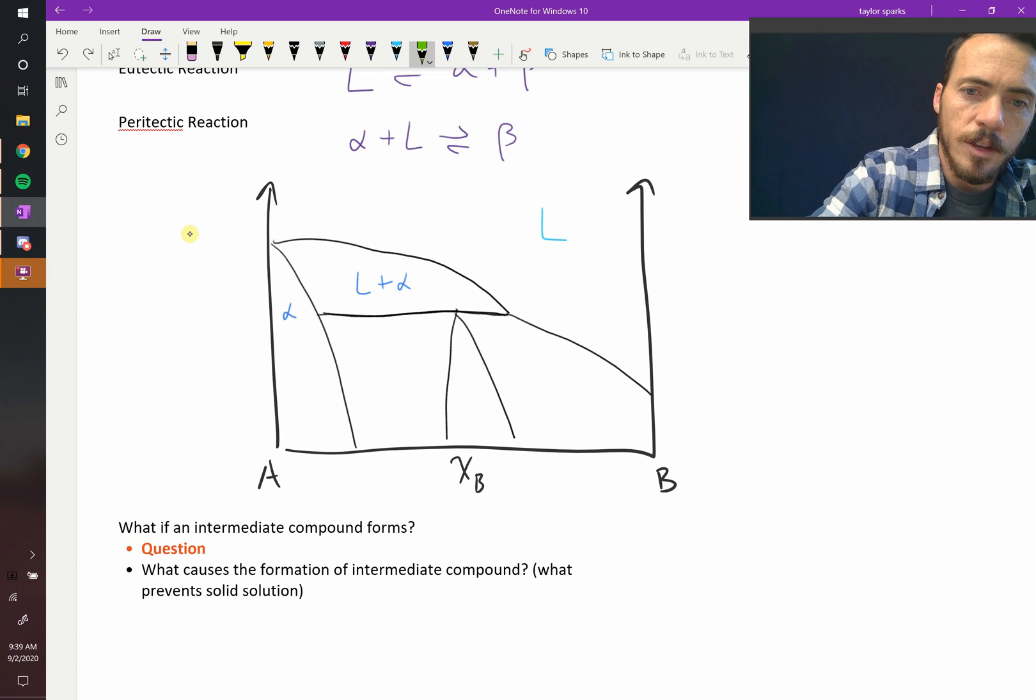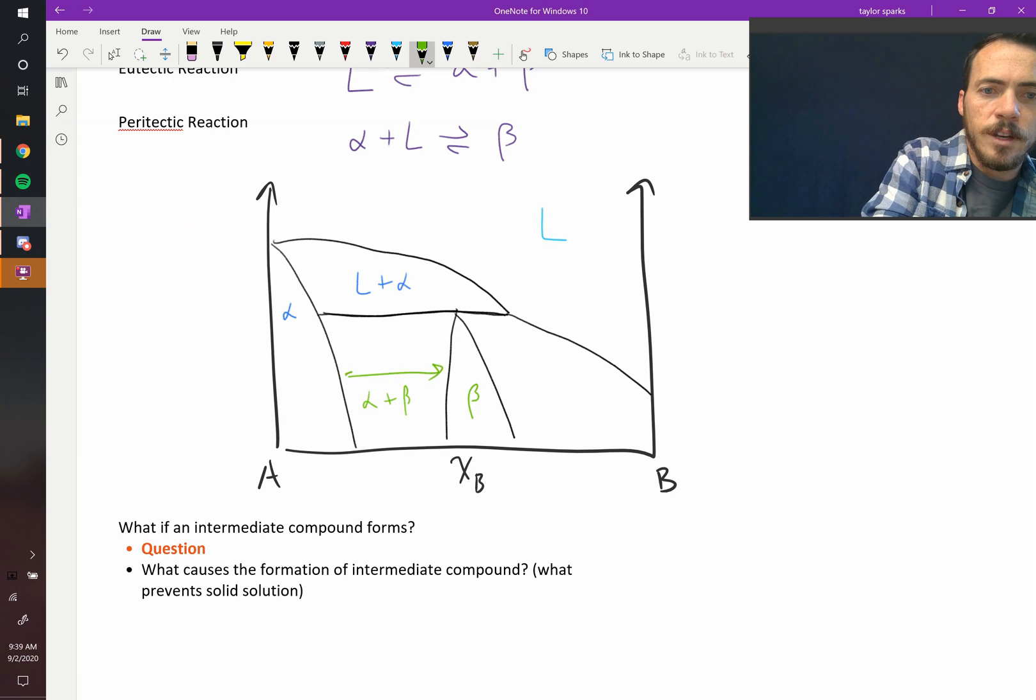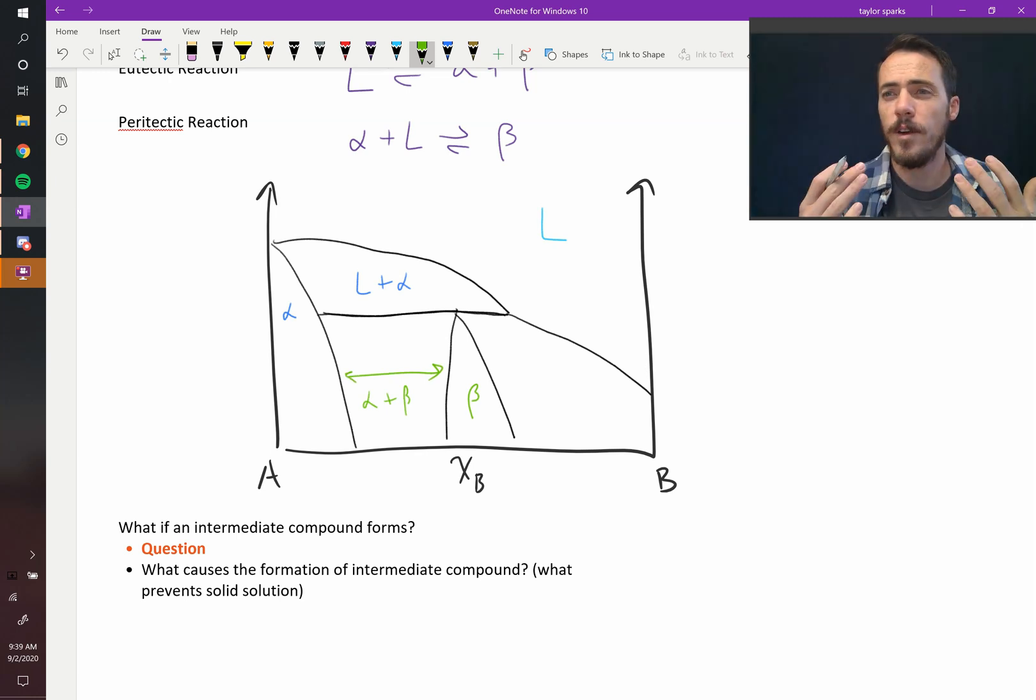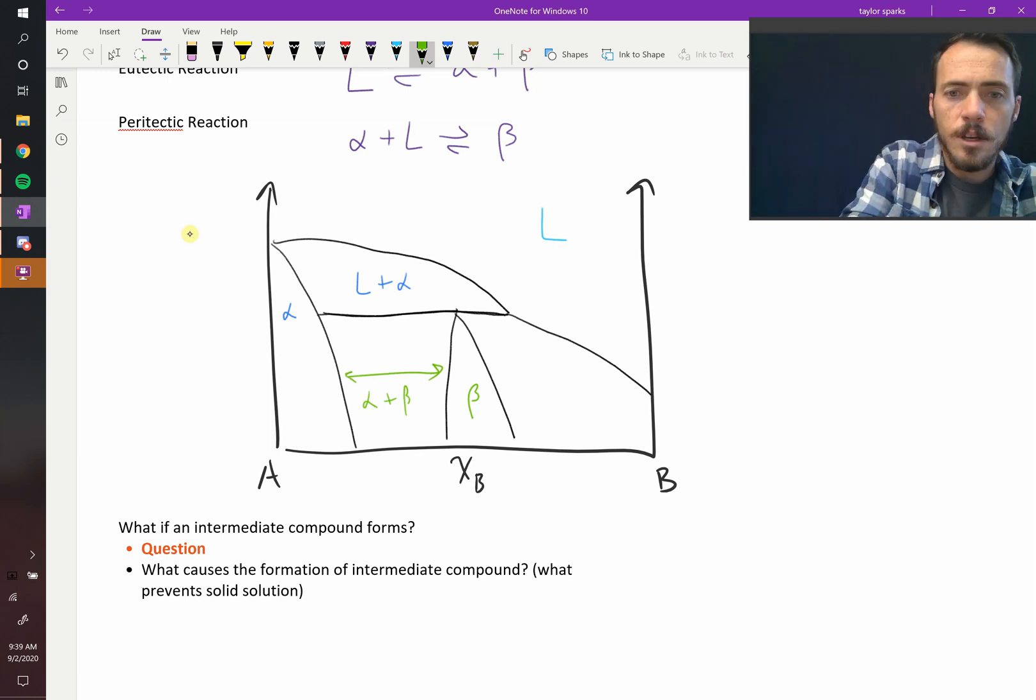So, we said this is a single phase. Let's call this beta right here. That makes this alpha plus beta. Whatever's on the left and right are the phases that will be present in a two-phase region. So, this region connected here to here is going to be beta plus liquid, right?